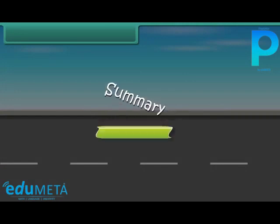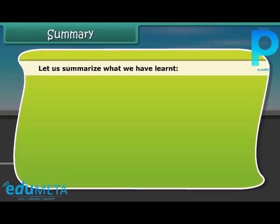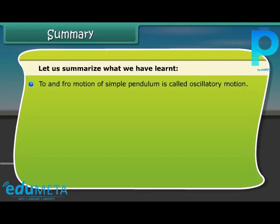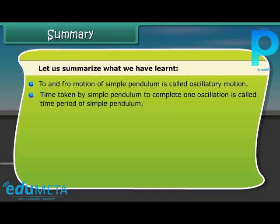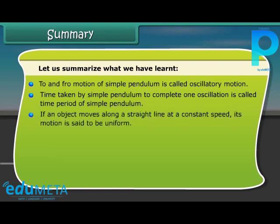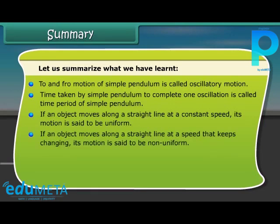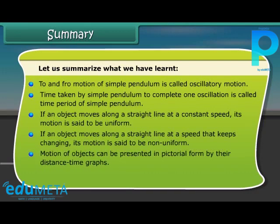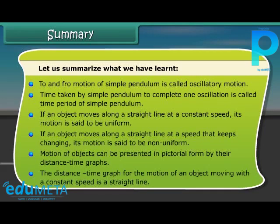Summary. Let us summarize what we have learned. To and fro motion of simple pendulum is called oscillatory motion. Time taken by simple pendulum to complete one oscillation is called time period of simple pendulum. If an object moves along a straight line at a constant speed, its motion is said to be uniform. If an object moves along a straight line at a speed that keeps changing, its motion is said to be non-uniform. Motion of objects can be presented in pictorial form by their distance time graph. The distance time graph for the motion of an object moving with constant speed is a straight line.